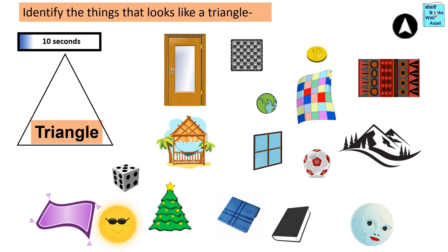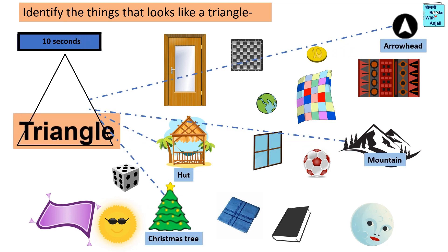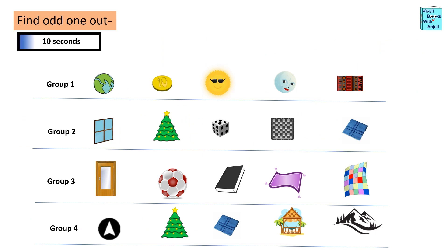Identify the things that look like a triangle. Triangle shaped things are arrowhead, mountain, hut, and Christmas tree.